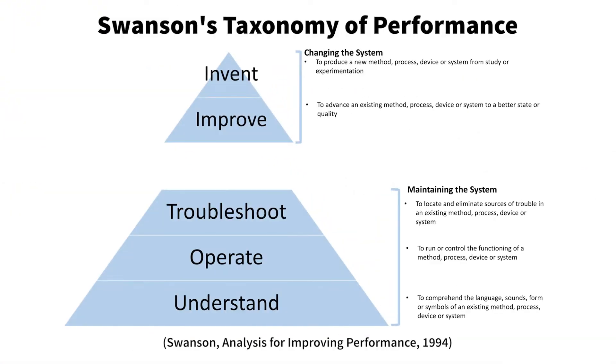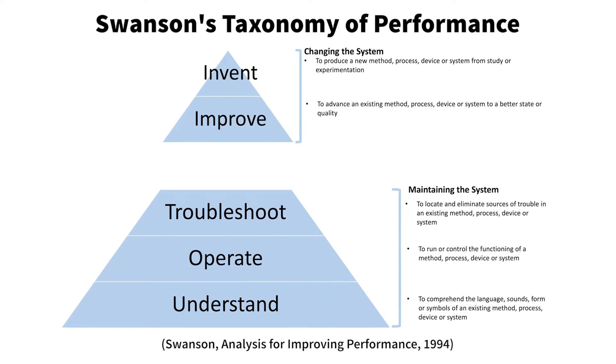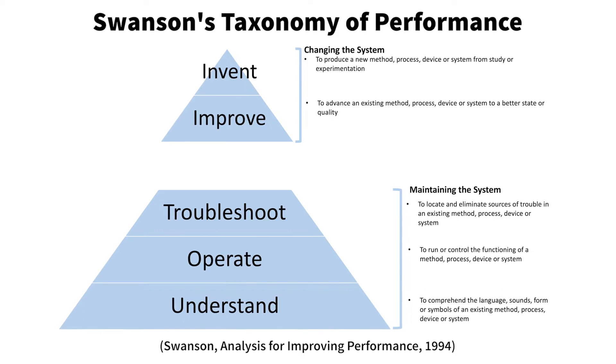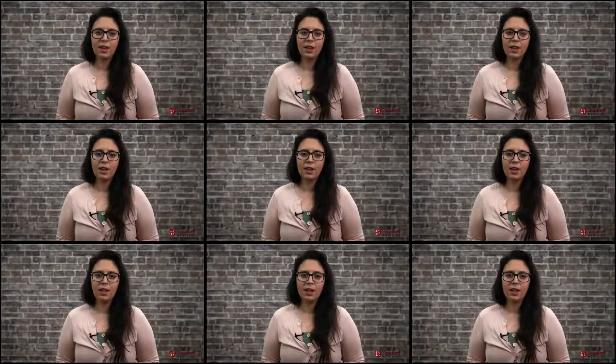But before we jump into trying to solve all the organizational and system problems, one question you should ask yourself is: should I? Swanson's taxonomy of performance helps us answer that question. In this model, Swanson breaks down the different types of problems facing a system and articulates how to solve them with the appropriate tools. It's important to discern whether a problem really falls into the category of maintaining a system or changing a system — way too often do organizational problems fall within the maintaining bucket, which includes things like troubleshooting, operating, and understanding.